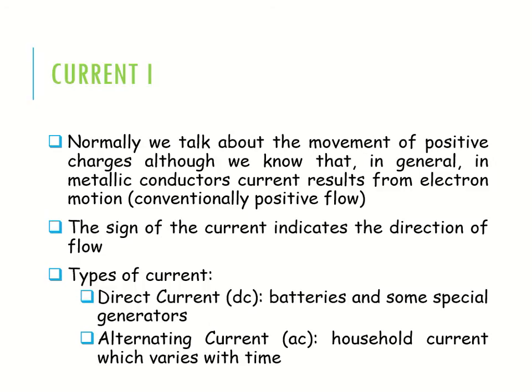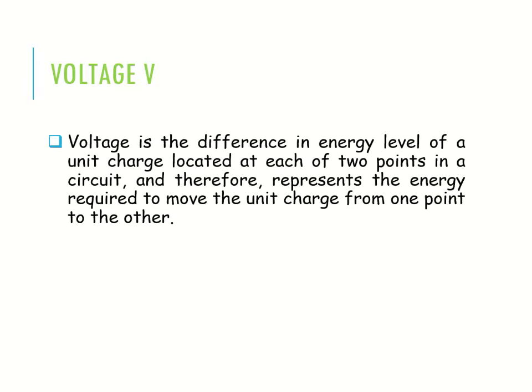There are two types of current. First, direct current (DC), which is generated from a battery and some special generators. Second, alternating current (AC), which is used in household applications and varies with time.